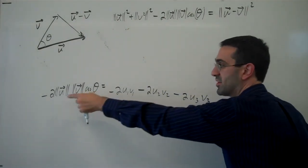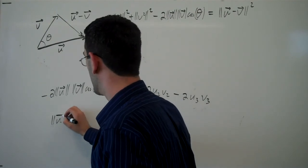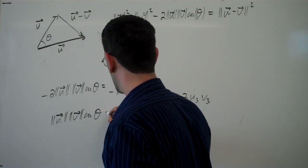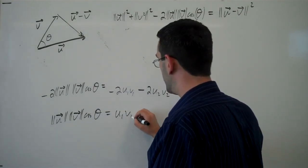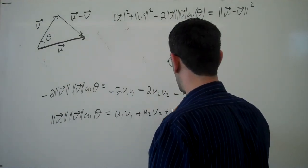Now we can divide by negative 2, and we'll be left with magnitude of u, magnitude of v, cosine theta equals u1v1 plus u2v2 plus u3,